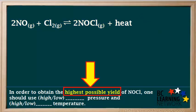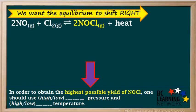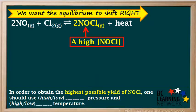We want to get the highest possible yield of the product NOCl. In order to do this, we want the equilibrium to shift to the right as much as possible. A shift to the right means we reach an equilibrium with a high concentration of product, which is NOCl in this case. A high concentration of NOCl at equilibrium means we would have a high yield of NOCl, which is what we want.